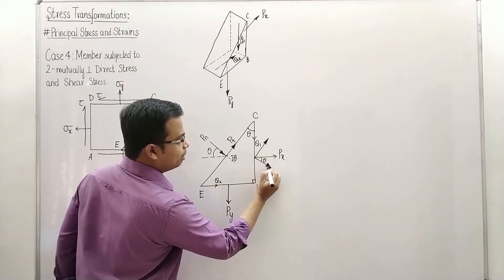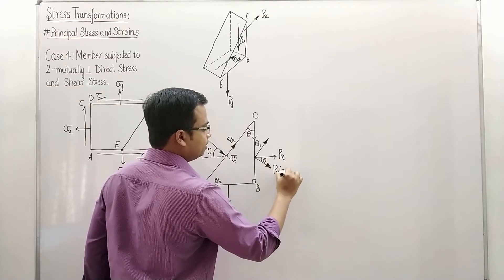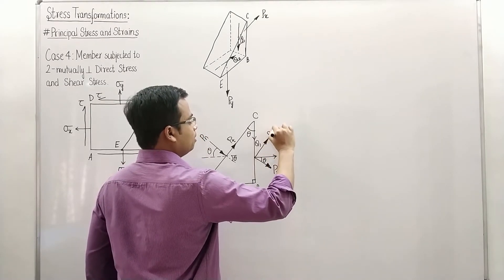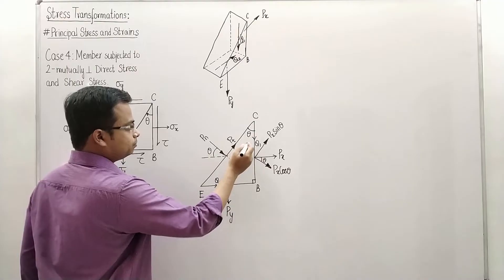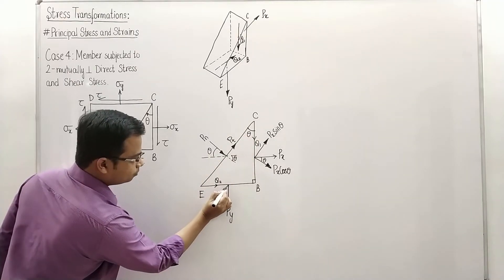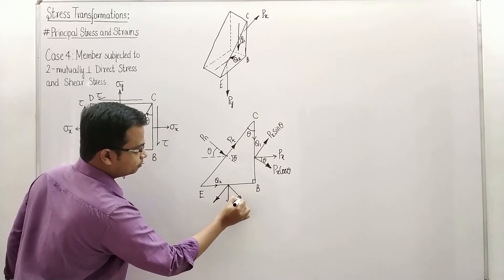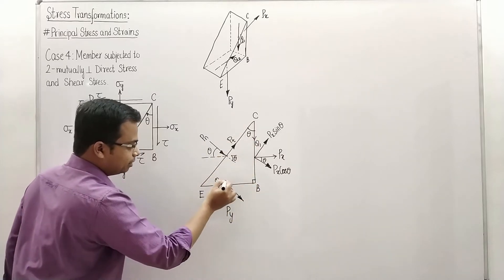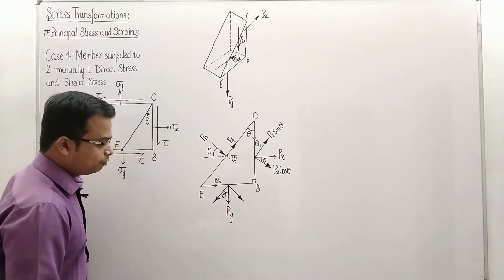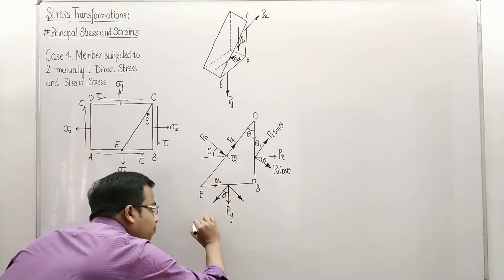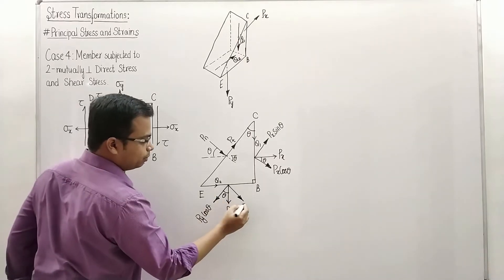The component of Px along Pn is Px cosine theta, and the component perpendicular to Pn is Px sine theta. For Py, one component will be along Pn and one perpendicular. This angle is also equal to theta, so the component along Pn is Py cos theta and the perpendicular component is Py sine theta.